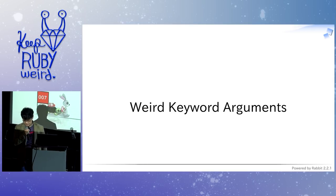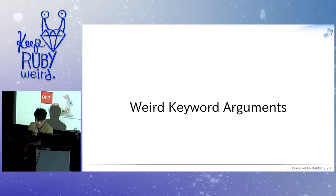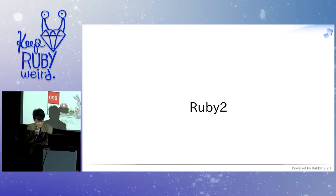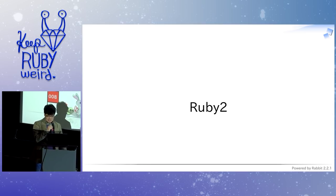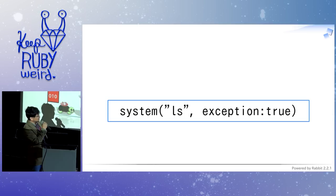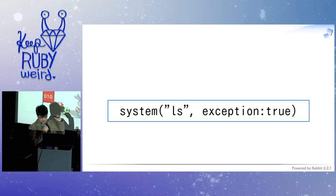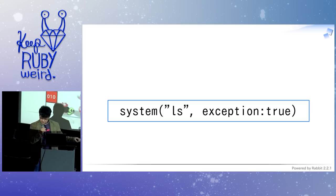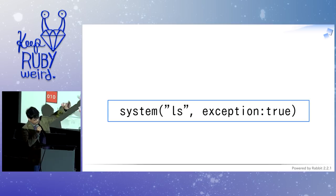The weird thing is keyword arguments. In Ruby 2, which was released in 2013 — the 20-year anniversary of the Ruby language — we introduced keyword arguments. So with keyword arguments, we can define something like a method with options, and when we fail, we return an exception instead of nil, so that we can provide keyword arguments like options.